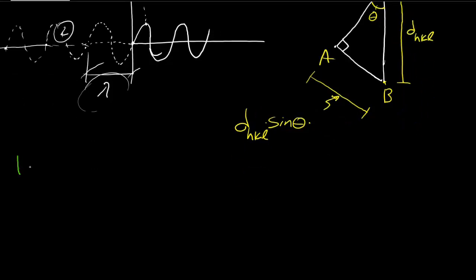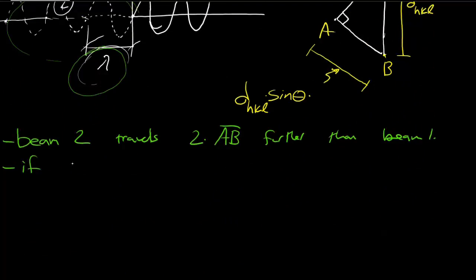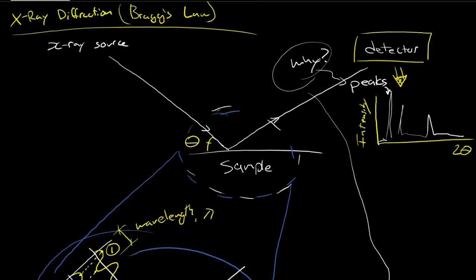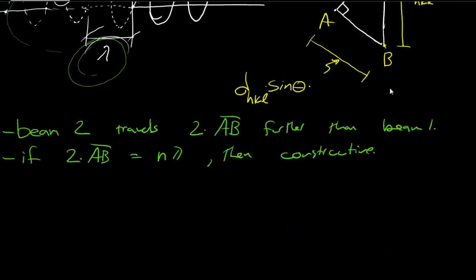So, let's see if we can wrap this up here. Beam 2 travels 2 times the line segment AB further than beam 1. Well, if that extra distance, that beam 2 travels right here, is equal to a multiple of the wavelength, if 2 times AB equals an integer of the wavelength, then it will be constructive. And if it's constructive, like we said up here, it will give us a peak. So what we're doing is we're saying the condition for that peak is the special geometry, or special angle, giving the extra distance equal to a multiple of the wavelength. And that is essentially Bragg's law.